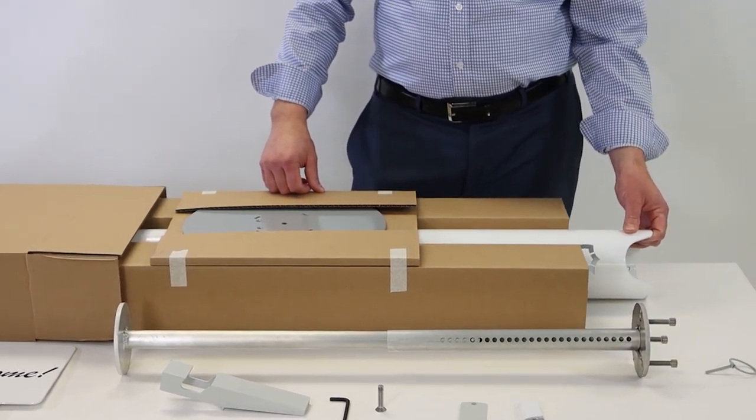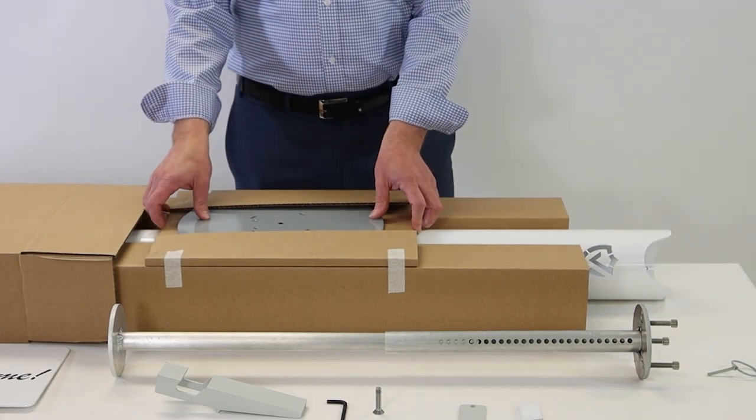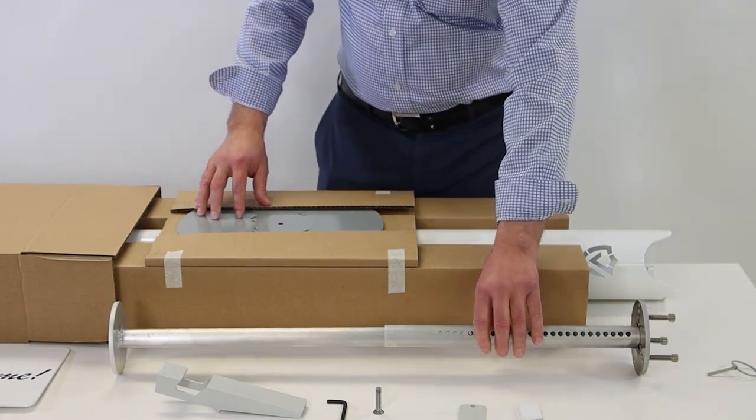First we begin with the main tube which comes in this box along with the base plate. Inside the main tube goes the piston.